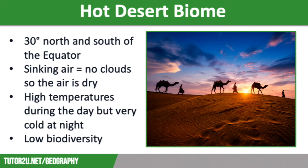Moving on to the hot desert biome. Hot deserts lie roughly 30 degrees north and south of the equator, close to the tropics of Cancer and Capricorn. Here the sun's rays are still very concentrated, but the air is sinking, which means that clouds don't form so the air is very dry, resulting in a high pressure belt and arid conditions. The lack of cloud means that temperatures are high during the day but plummet overnight. The conditions in the desert biome are extremely harsh, so animals and plants have to be well adapted to survive.